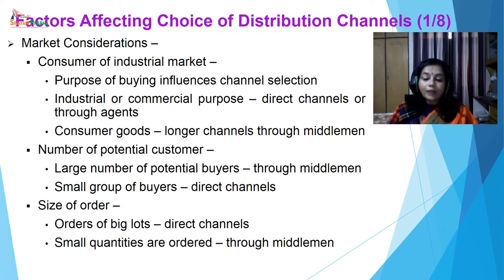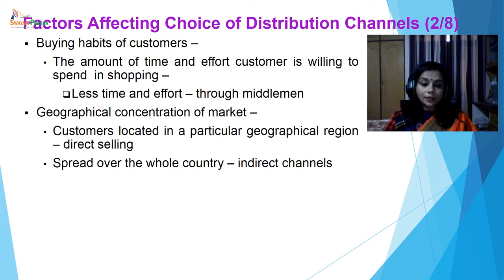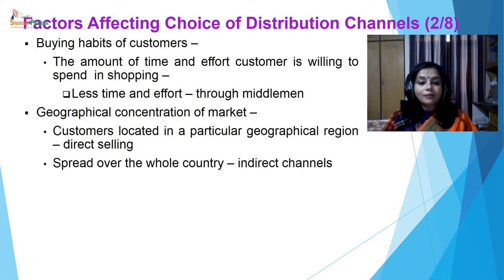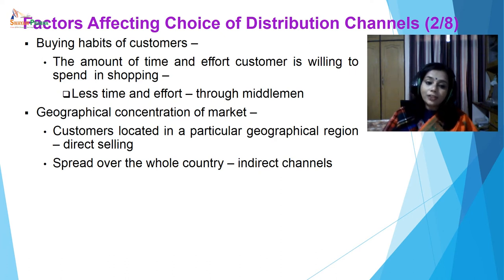Then the number of potential customers: if a large number of potential buyers are there, then it is better to go through middlemen; if a small group of buyers, then direct channels. Then the size of the order: if orders are of big lots, direct channels should be used; small quantities are ordered through middlemen. Another factor is buying habits of the customers — the amount of time and effort a customer is willing to spend in shopping determines the channel. Less time and effort means through middlemen; more time available means you can go for direct marketing. Geographical concentration of market is another factor: customers concentrated in a particular region means direct channel; if spread over the whole country, then indirect channel or middlemen.